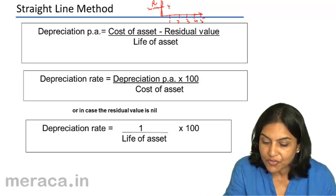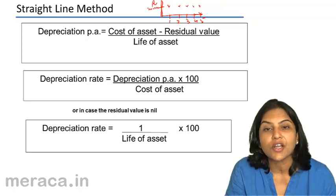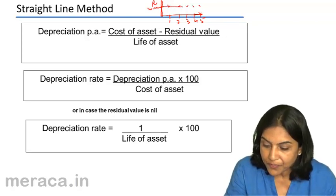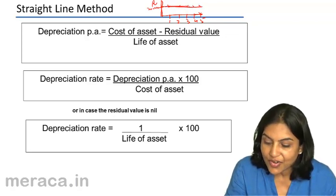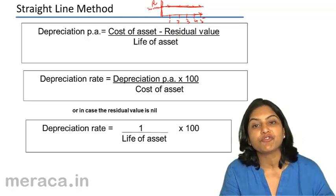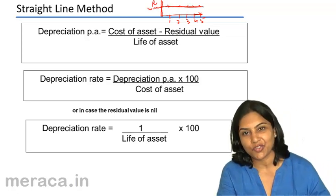20,000 in the first year, 20,000 in the second year, 20,000 in the third year, 20,000 in the fourth year, and 20,000 in the fifth year. This is the straight line method of charging depreciation.